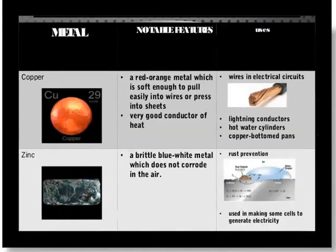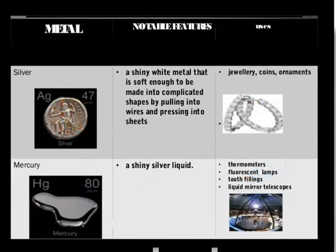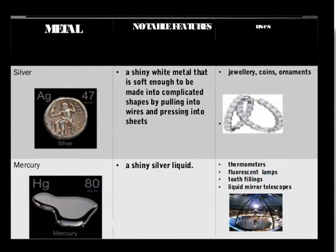Copper: a red-orange metal which is soft enough to be drawn into wires and spread as sheets. Good conductor of heat and electricity — used in making electrical circuits, lightning conductors, hot water cylinders and copper-bottomed pans. Zinc: a brittle blue-white metal which does not corrode in air — used to prevent rusting by the process of galvanization. Silver: a white shiny metal soft enough to be made into complex shapes — used in making jewelry, coins and ornaments. Mercury: a shiny silver liquid used in thermometers, fluorescent lamps, tooth fillings, etc.